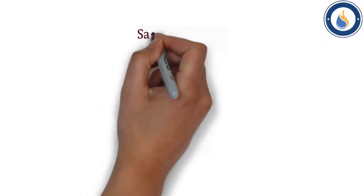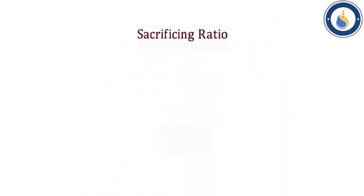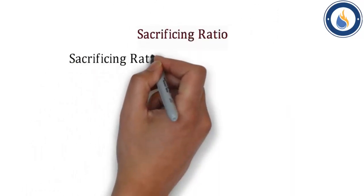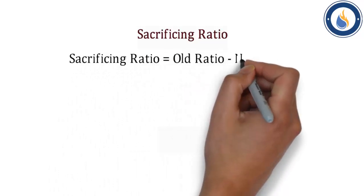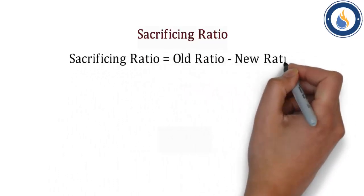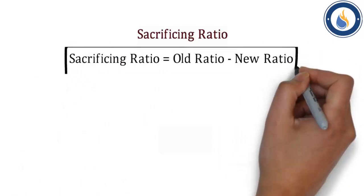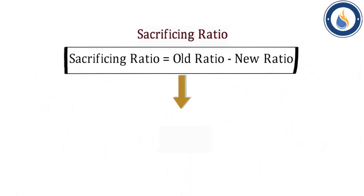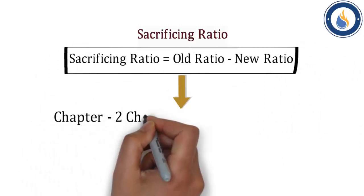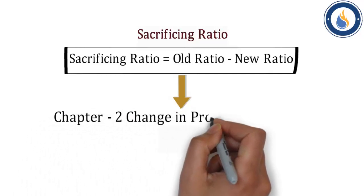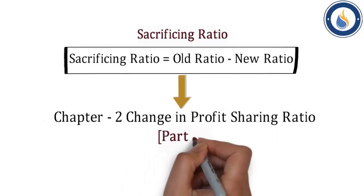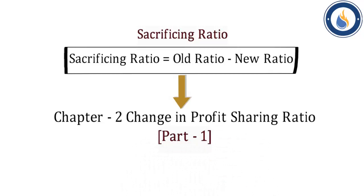Then next is Sacrificing ratio. Sacrificing ratio का formula होता है: Old ratio minus New ratio. इस chapter में आपको sacrificing ratio की भी ज़रूरत पड़ेगी। अगर आपको sacrificing ratio सीखना है तो आप chapter number 2, Change in profit sharing ratio का Part 1 देख सकते हैं, जिसमें मैंने sacrificing ratio को explain किया है।